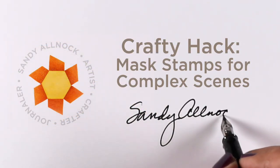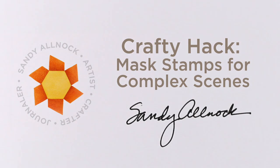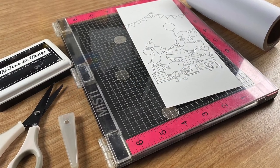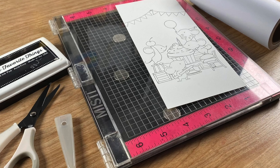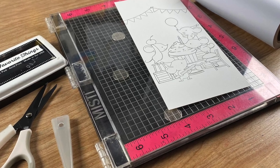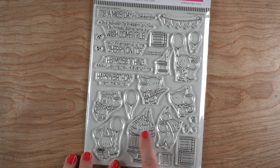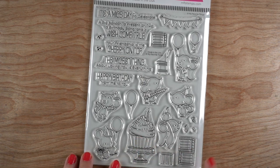Well hi there, it's Sandy Allnock with a crafty hack: masking stamps for complex scenes. This is a much requested video - lots of you want to know how I make all these complex scenes with so many stamps in them. This will be a video that I'll point you back to if you ask that question in the future.